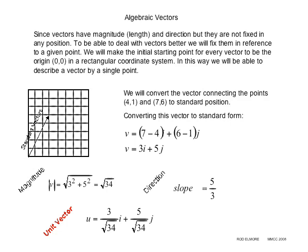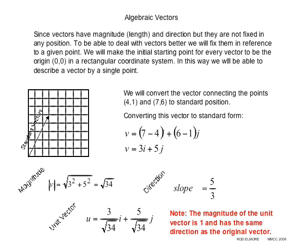Now the magnitude of this is actually 1. That's its name, unit. One unit vector. It's pointing in the same direction, but it has a length of 1. Note the magnitude of the unit vector is 1 and has the same direction as the original vector.